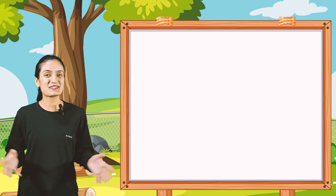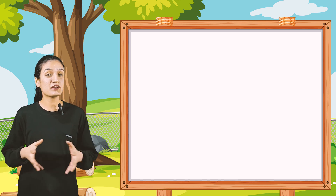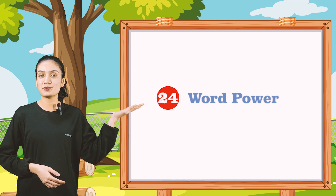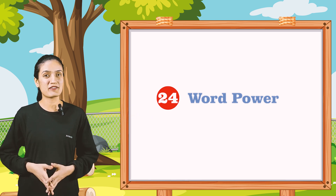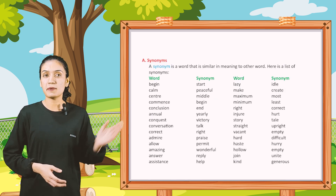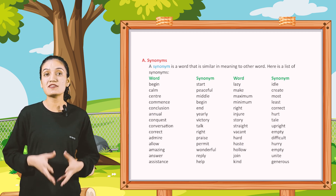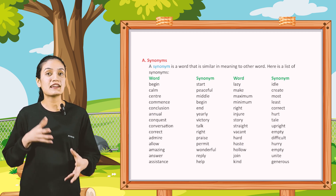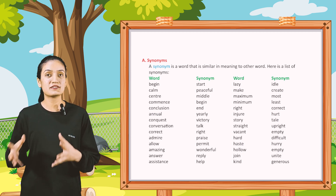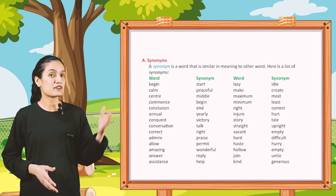Hello kids. Welcome back to the English grammar class. Today we are going to start chapter number 24, that is word power. So let's begin with part A, that is synonyms. A synonym is a word that is similar in meaning to another word. Here is a list of synonyms.